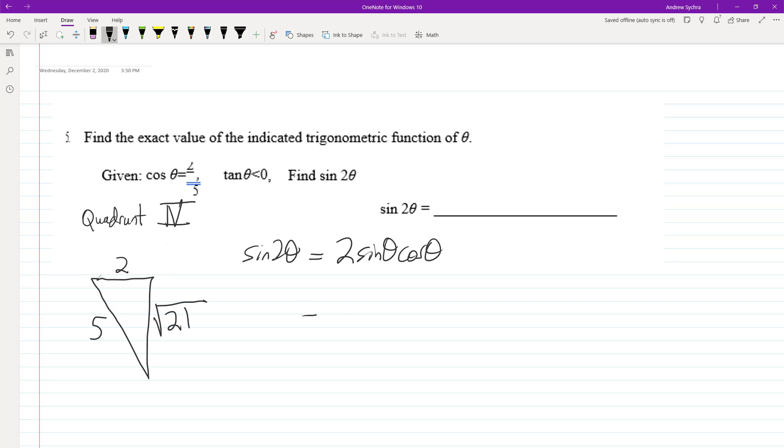Okay, so what we're going to have here is 2 times, and this should be negative root 21, 2 times the sine, which is going to be negative square root of 21 over 5, times the cosine, which is going to be 2 over 5. So what we're going to have here is negative 4 root 21 over 25.